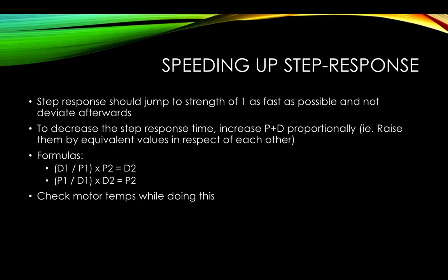So, basically, you take your, if you're changing your P value, and you wanna find your new D value, you take your original D value, divide it by your P value, and then multiply it by your new P value, and that'll give you your new D value. And the same is true, just reverse, for finding your new P term.